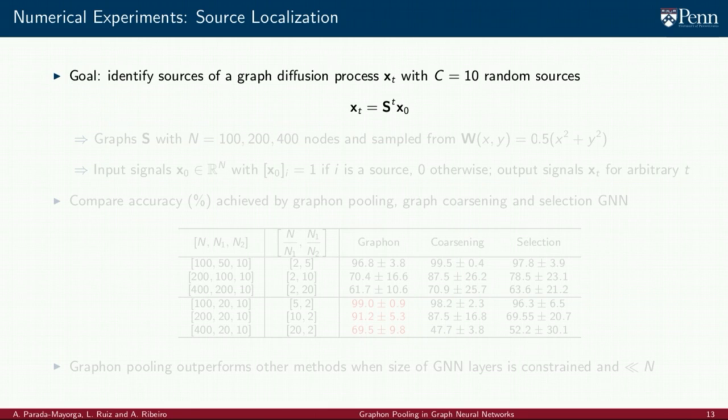We test our proposed pooling strategy on two numerical experiments. The first is source localization, where the goal is to identify the sources of a graph diffusion process with C = 10 random sources given the equation on the slide. In this equation, S is the graph, which is sampled from a polynomial graphon. We consider three different scenarios where the graph S has 100, 200, and 400 nodes.